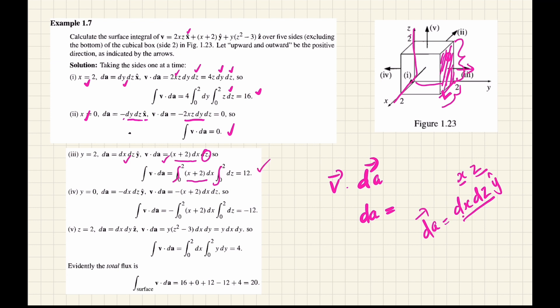Integrating gives the value 12 for that surface contribution. Adding the contributions from all surfaces of the cubic box, we get a total closed surface integral value of 20.